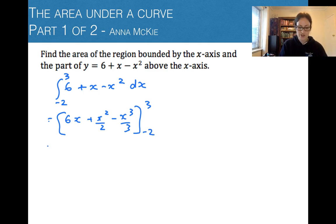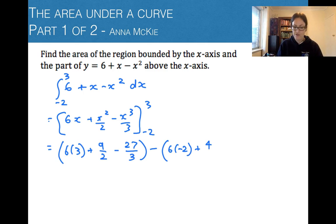Now substitute each number in with round brackets: 6(3) + 3²/2 - 3³/3, close brackets, subtract using brackets: 6(-2) + (-2)²/2 - (-2)³/3. Brackets are very important here.